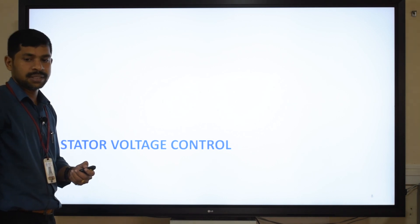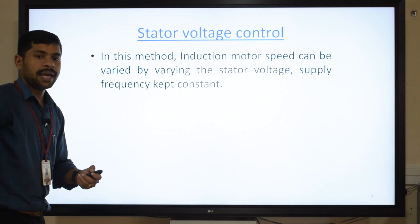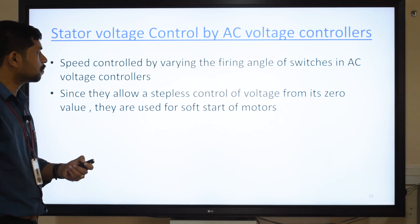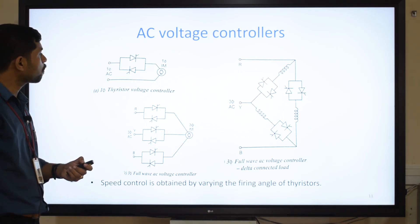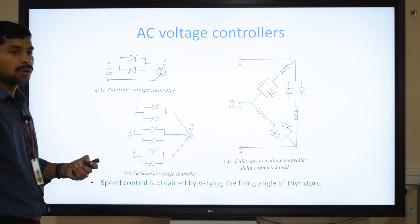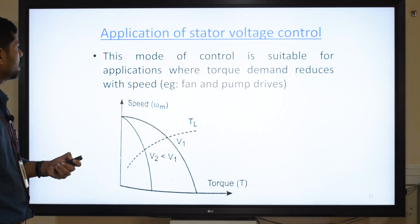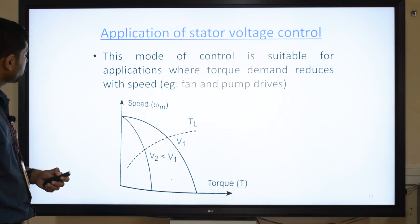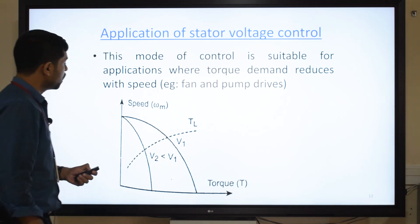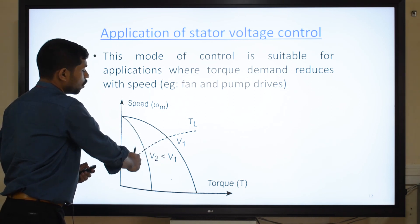Now let us see the first speed control technique: stator voltage control. In this method, supply frequency is kept constant and voltage is varied. This can be done easily using an AC voltage controller studied in power electronics. By varying the firing angle of the thyristors, we can control the RMS value of the output voltage and hence control the speed of the induction motor. This type of control applies where torque demand reduces with speed. As voltage V1 reduces, speed reduces, and accordingly torque is also reduced.